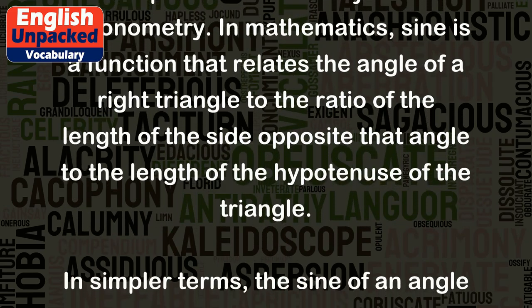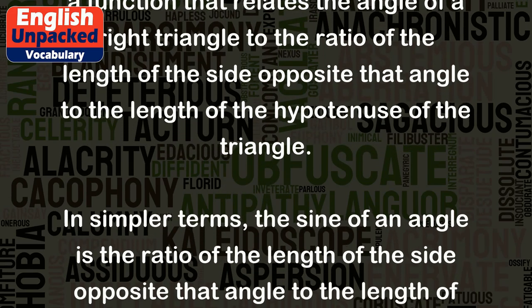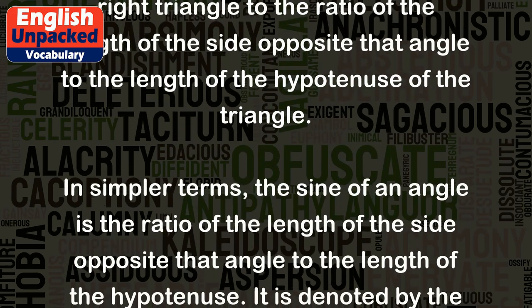In simpler terms, the sine of an angle is the ratio of the length of the side opposite that angle to the length of the hypotenuse.